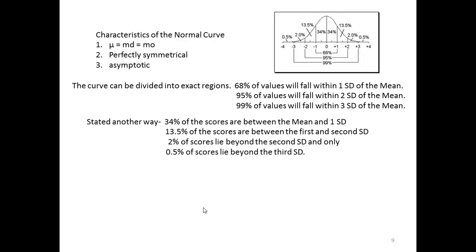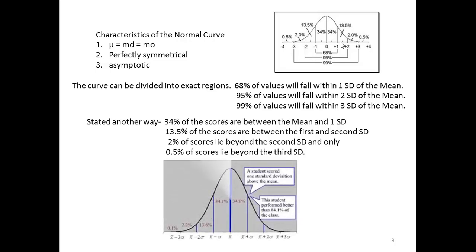State it another way. 34% of our scores are between the mean and the first standard deviation if you go right or left of the mean. 13.5% of the scores are between the first and second standard deviation. And 2% of the scores lie beyond the second standard deviation. And only 0.5% of all scores will lie beyond the third standard deviation.